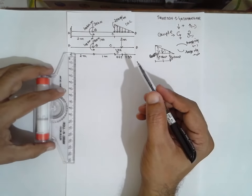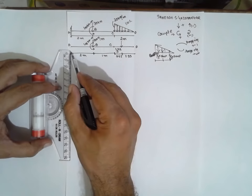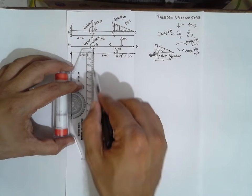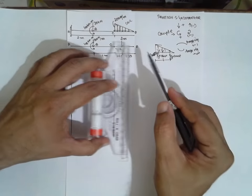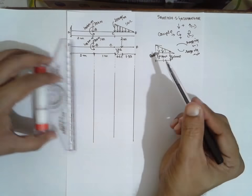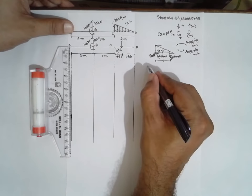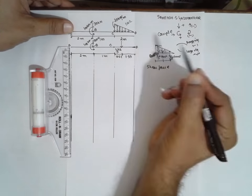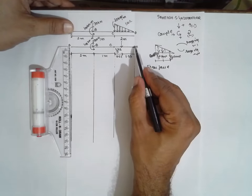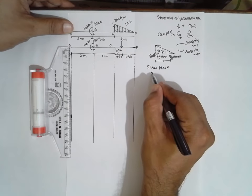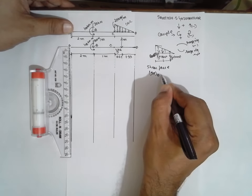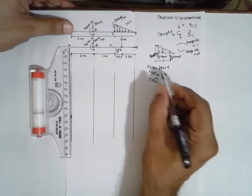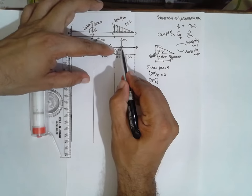Now draw the lines for construction of the shear force and bending moment diagram. At point D there is no load, therefore shear force at D will be 0.